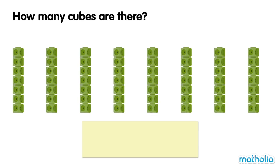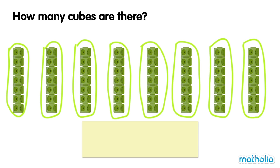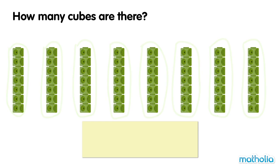How many cubes are there? There are eight groups of cubes. There are seven cubes in each group. Let's count in sevens to find the total. Seven,